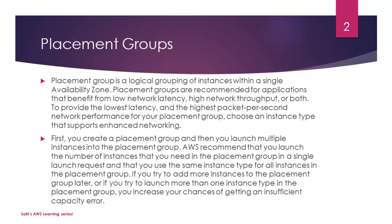To provide low latency and the highest packet per second network performance for your placement group, choose an instance type that supports enhanced networking. Not all EC2 instance types support this placement group — only a few support this model, things like compute optimized, memory optimized, storage optimized, and GPU. Those are the supported instance types.